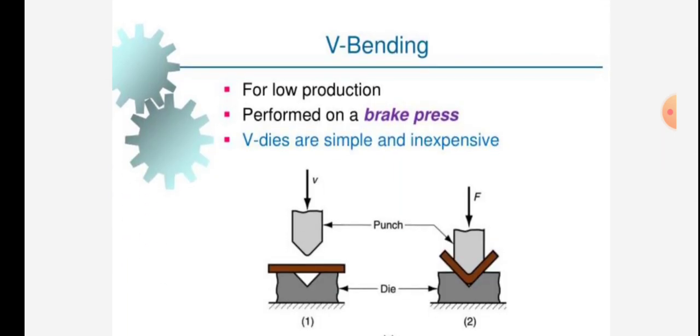For low production, V-bending is performed on a press brake. V dies are simple and inexpensive.